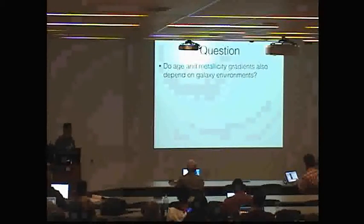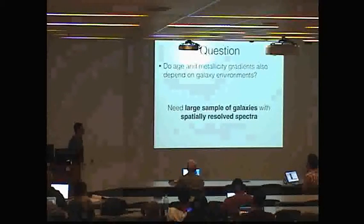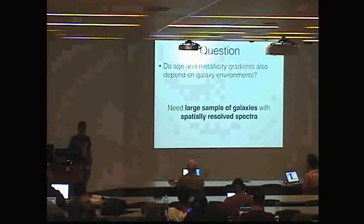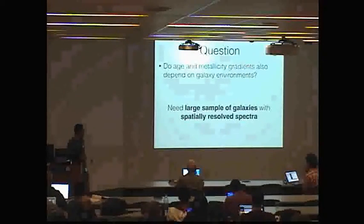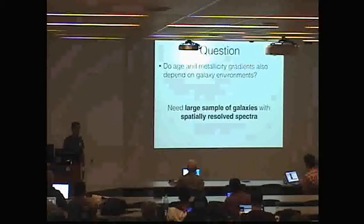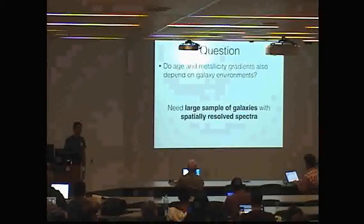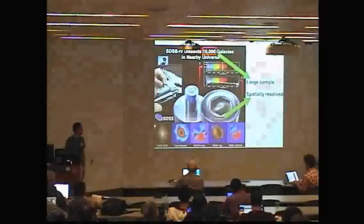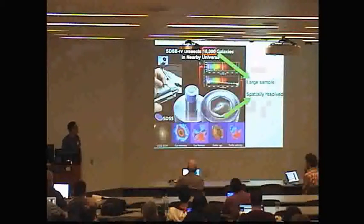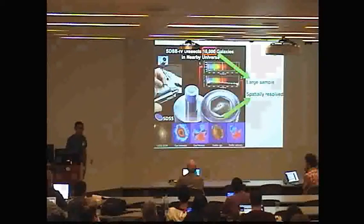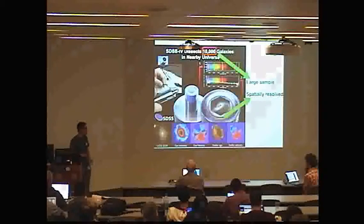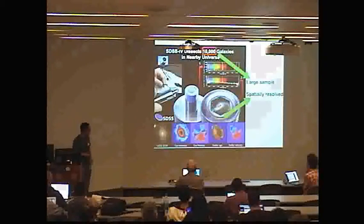So this is a hard question to answer because you need a large sample of galaxies with spatially resolved spectra. A large sample of galaxies is needed because we want to quantify the environments, and spatially resolved spectra are needed because we want to measure the metallicity and age gradients more accurately. So this could be done with manga, which is Mapping Nearby Galaxies at APO, which has about 10,000 galaxies. It's a pretty large sample and we have spatially resolved IFU spectra.